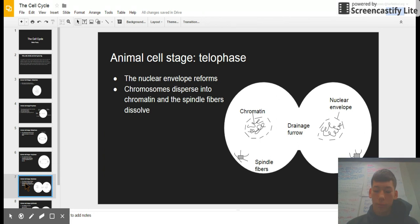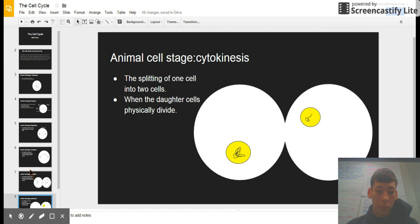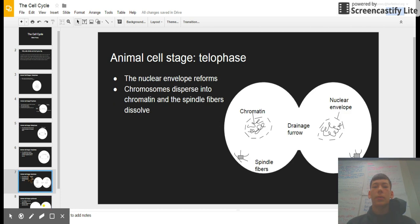Telophase is the second to last phase before cytokinesis. Watch stuff start to happen—the nuclear envelope reforms. Chromosomes disperse into chromatin, and the spindle fibers dissolve.